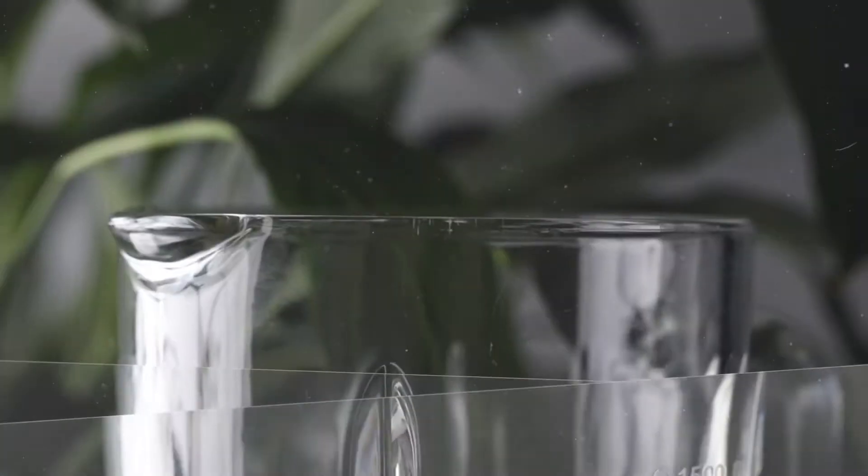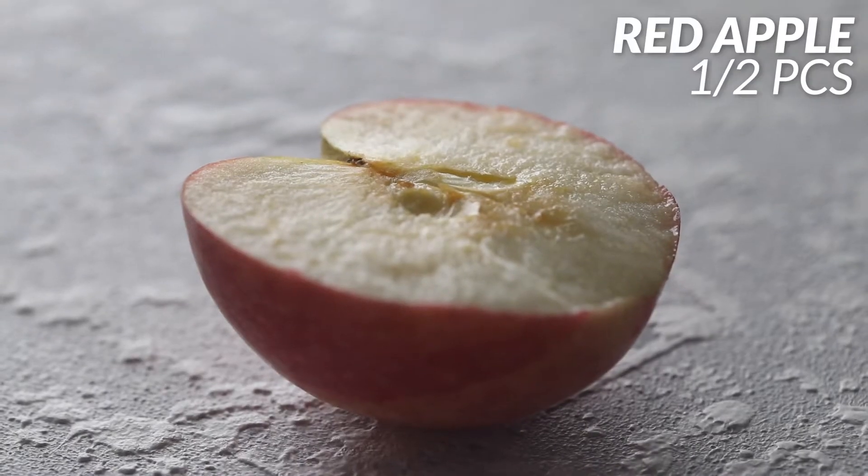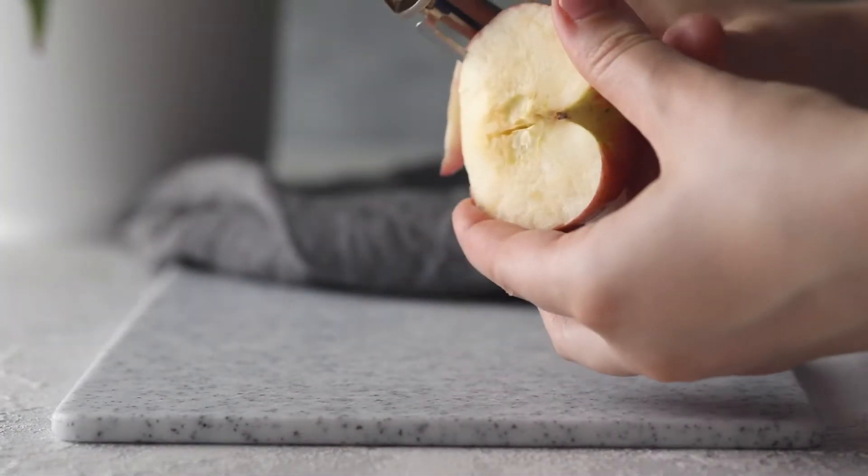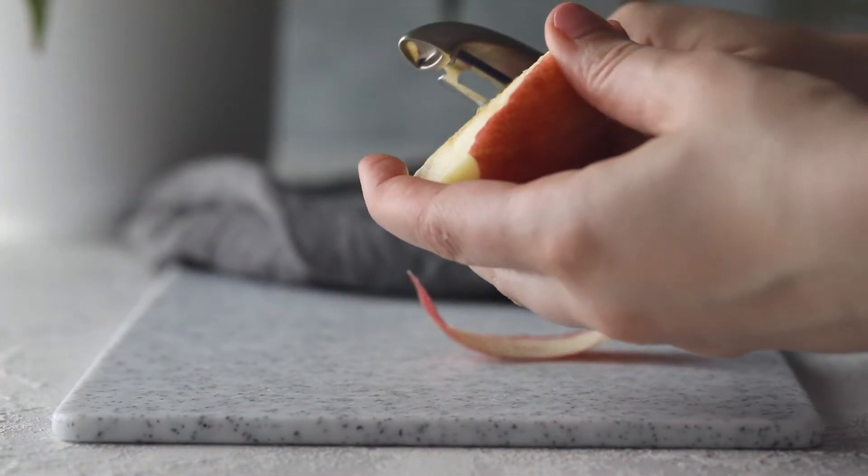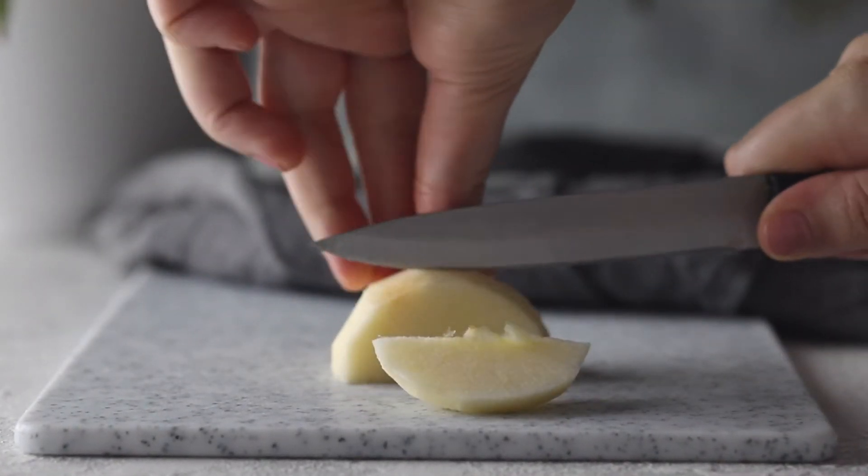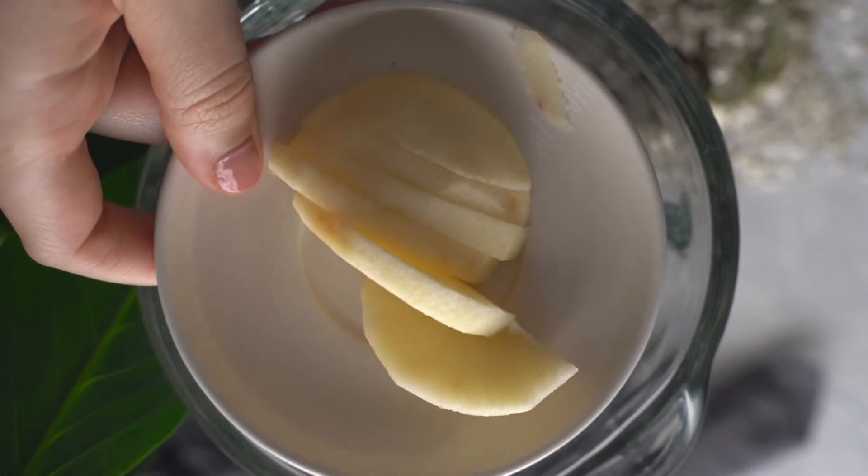I'm getting half a medium red apple. I'm going to quickly peel it and then slice it. You don't need to slice it too much—it will do the job in the blender. Apples are actually a great source of fiber and vitamin C, which we love. Just add it into your blender.